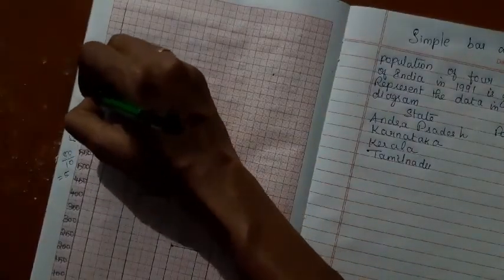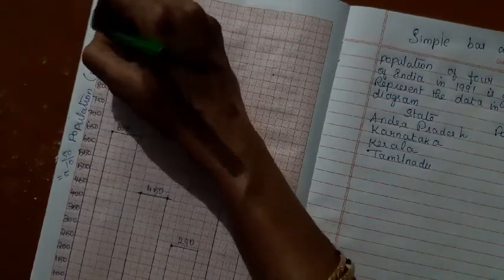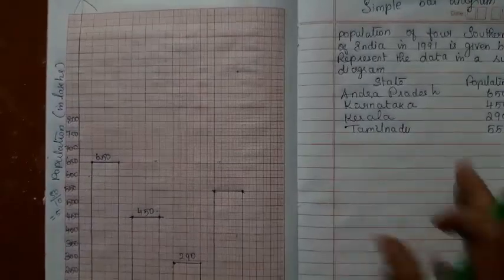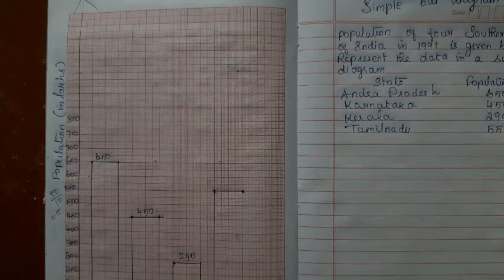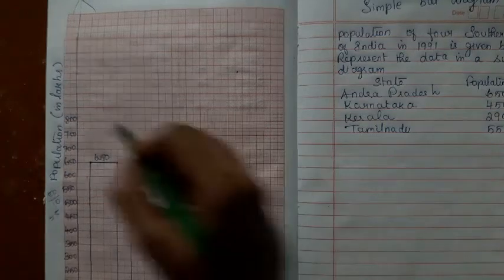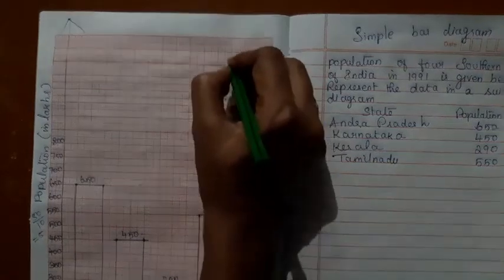And you have not divided, converted the population into lakhs. So, it is in lakhs. It is not necessary to write it as 650 lakhs. Not necessary. You can just add a note here that it is in lakhs.